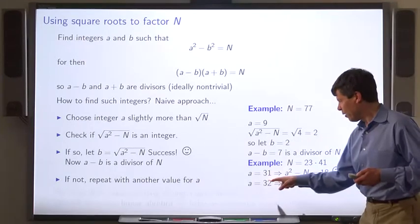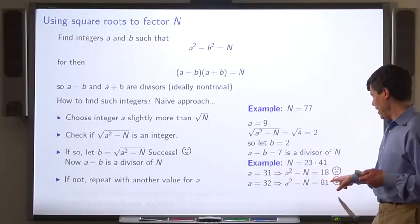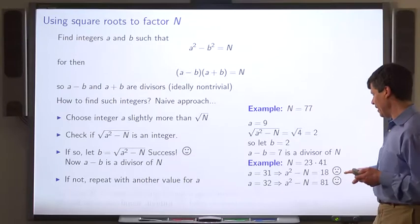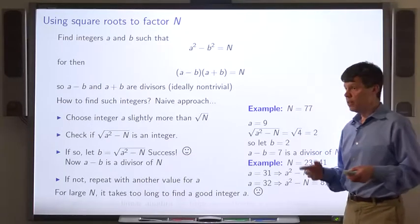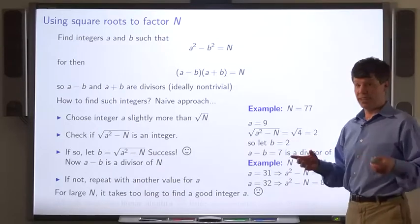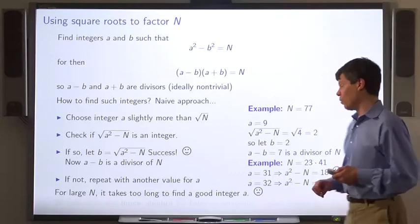Let's try a equals 32. Well, then a squared minus n is 81, and that is a perfect square. So we've succeeded once again. However, when n is very large, it takes a long time to find an integer a that works in this way.